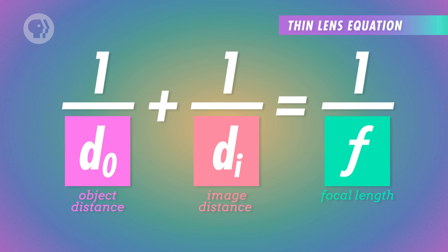This is the thin lens equation, which is derived from ray diagram geometry. For a single converging lens, the focal length and the object distance will always be positive. The image distance will be positive if the image is on the opposite side of the light source. This equation holds true for converging lenses, as well as their opposite, diverging lenses.